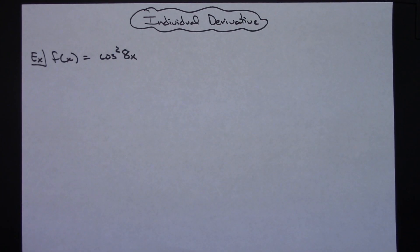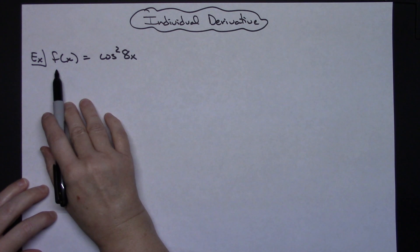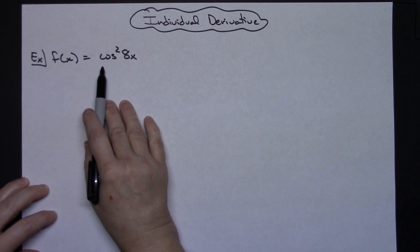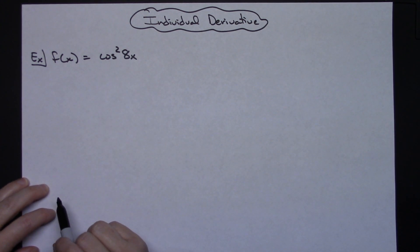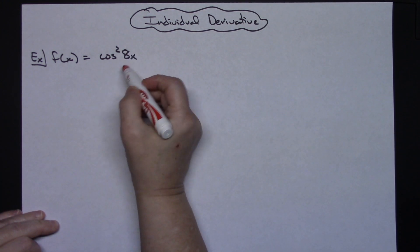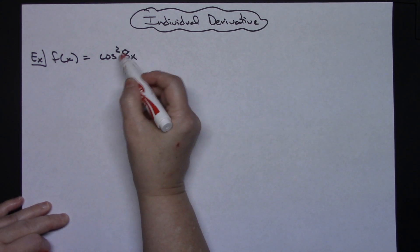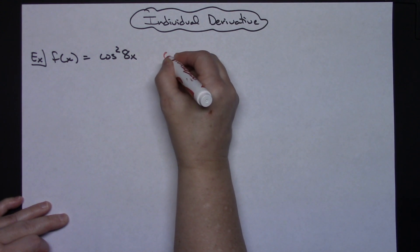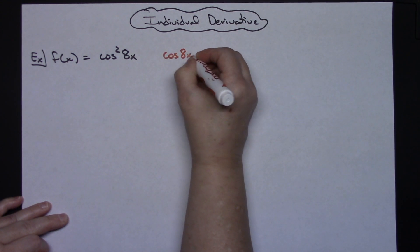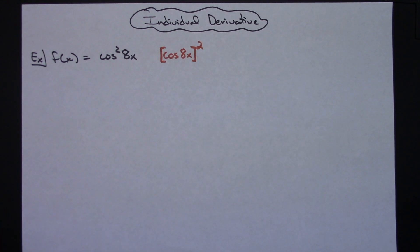In this video I'm going to work out an individual derivative. It's going to be a trig derivative and it's going to have a couple of examples of some chain rule in there. So let's say our function is f of x equals cosine 8x quantity squared. Usually what I do first is I have my students rewrite this so they can more clearly see where the inside and outside of the function is. So I make my students write cosine of 8x raised to the second power.